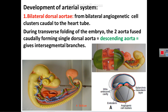This demonstration, although from a chicken embryo, shows that anteriorly the angiogenetic cell clusters form a heart loop. Caudally, the angiogenetic cell clusters form right and left dorsal aorta — the bilateral dorsal aorta. This bilateral dorsal aorta is affected by lateral folding of the embryo. The lateral folding results in fusion of the right and left dorsal aorta to form a single dorsal aorta, as shown in this older chicken embryo sample.